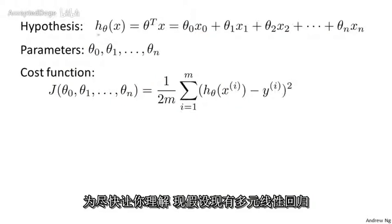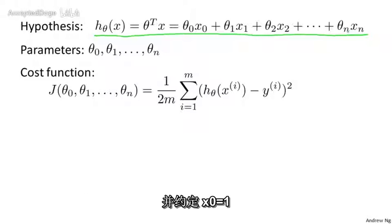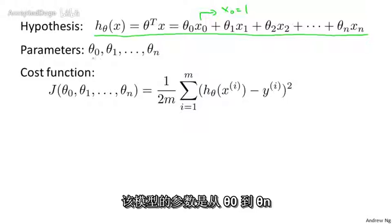To quickly summarize our notation, this is a formal hypothesis in multivariate linear regression, where we've adopted the convention that x0 equals 1.